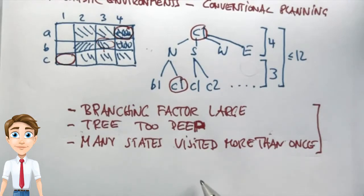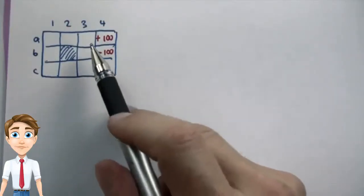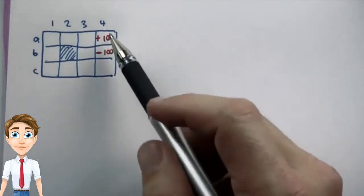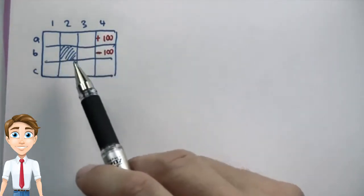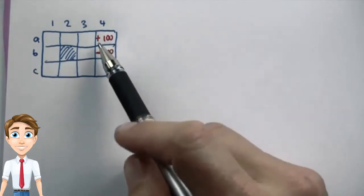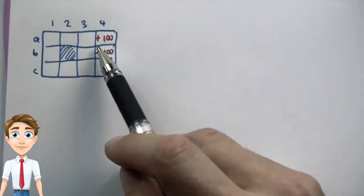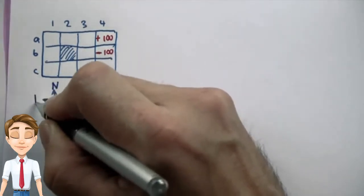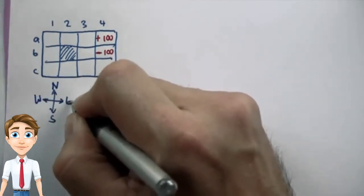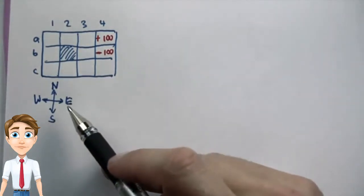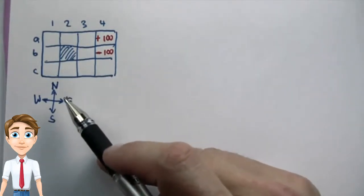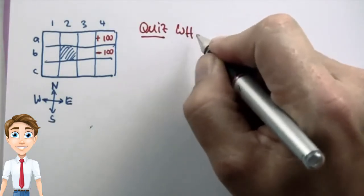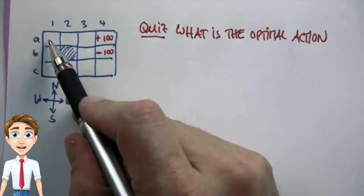So let's get back to the policy case. Let's look at the grid world again. I wish to find an optimal policy for all these states that with maximum probability leads me to the absorbing state plus 100. I assume there are four different actions — north, south, west, and east — that succeed with probability 80%, provided that the corresponding grid cell is actually attainable. I wish to know what is the optimal action in the corner state A1.